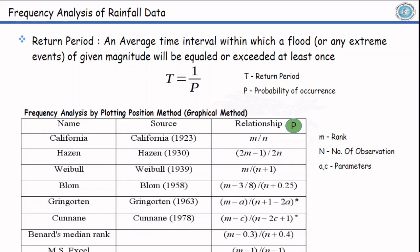This table shows the relationship of probability. This is the probability given by various researchers, and return period and the probability of occurrence is inversely related.